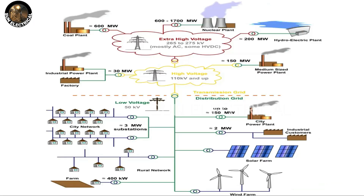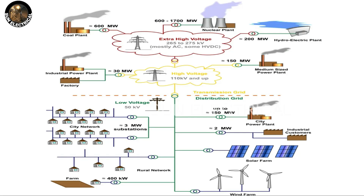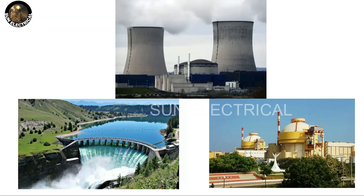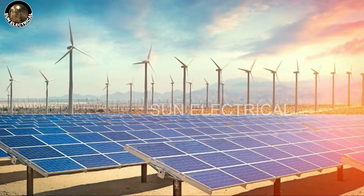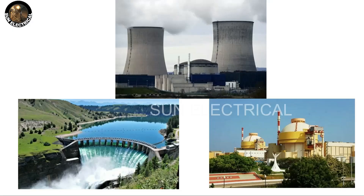Let me explain what types of power plants there are. I have 5 power plants: thermal, hydro, and nuclear power plant, and solar and wind energy — making 5 power plants in total. Thermal, hydro, and nuclear power plants generate power continuously.